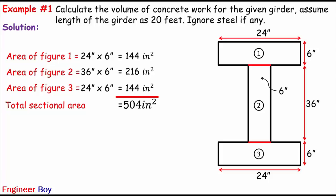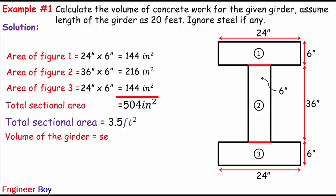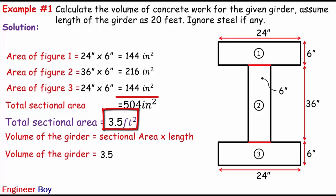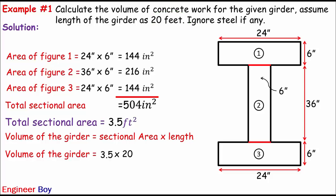We can convert this value into square feet if we divide by 12 two times, giving us 3.5 square feet. The volume of the girder equals the sectional area times the length of the girder: 3.5 square feet times 20 feet gives us the volume of the girder equals 70 cubic feet. So this is how we calculate the volume of concrete work for the given girder, because the section is so simple.